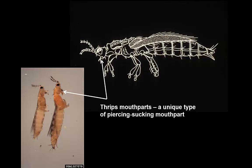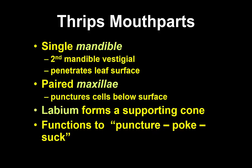Thrips are commonly associated with plants and they feed with a type of mouthpart designed to pierce and remove fluids, but their mouthparts are arranged in a very different way than those of aphids or members of the order Hemiptera. Thrips mouthparts are unique, and probably the more interesting thing is that they only have a single mandible.